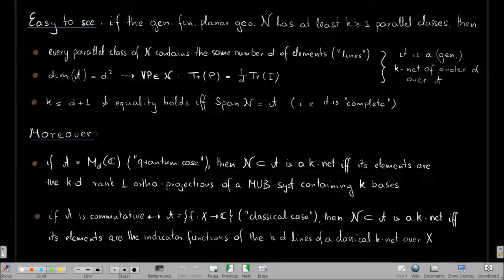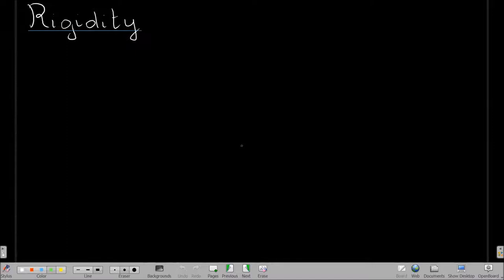This common framework contains both classical k-nets and mutually unbiased bases — it is just the choice of C*-algebra that makes them different. The point of a common framework is that you can try to prove generic statements that hold at once for both structures, rather than having separate proofs for MUBs and for classical k-nets. We found one nice non-trivial example of such a statement: rigidity.